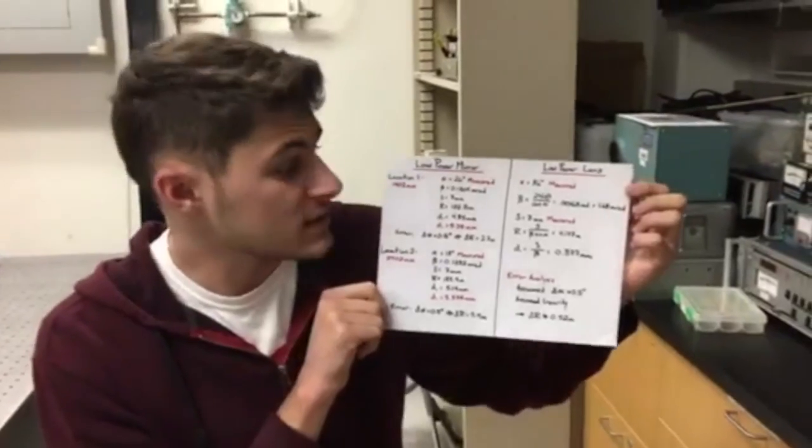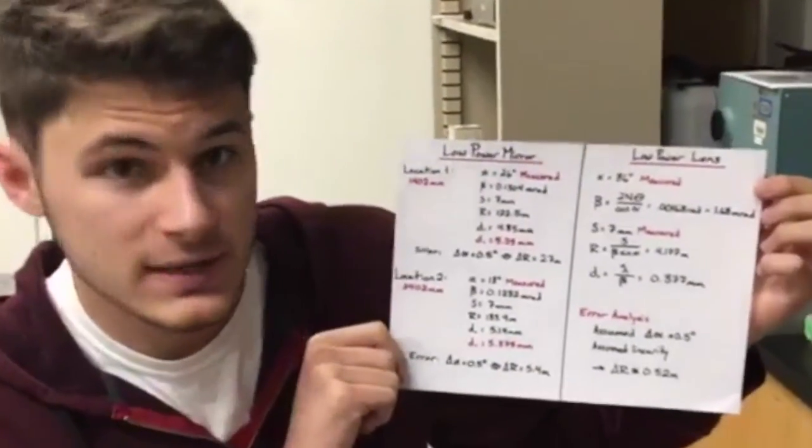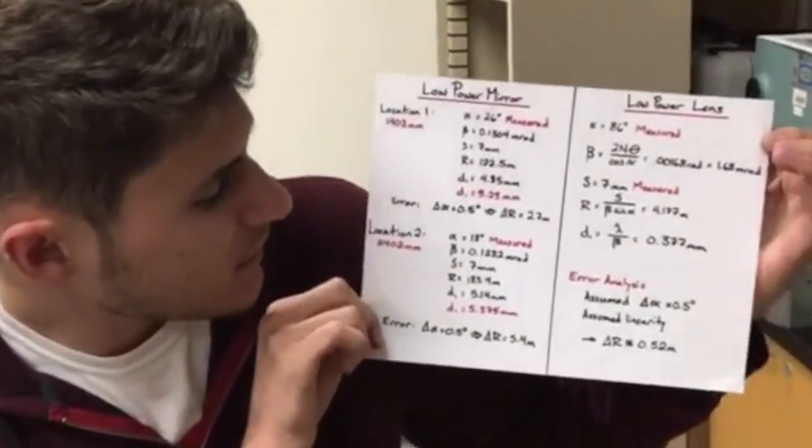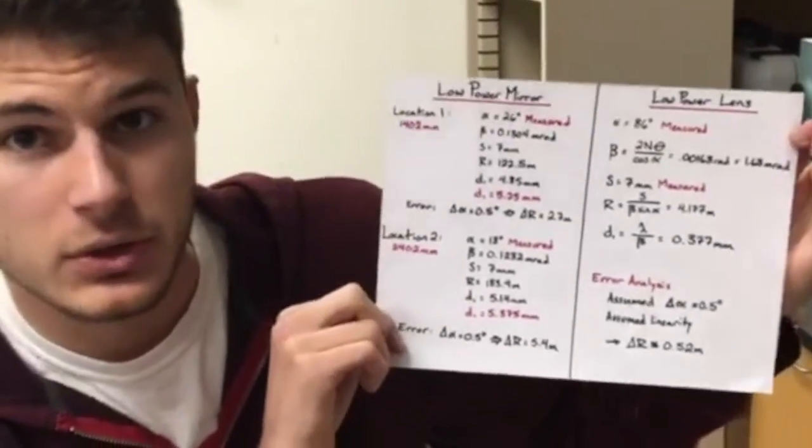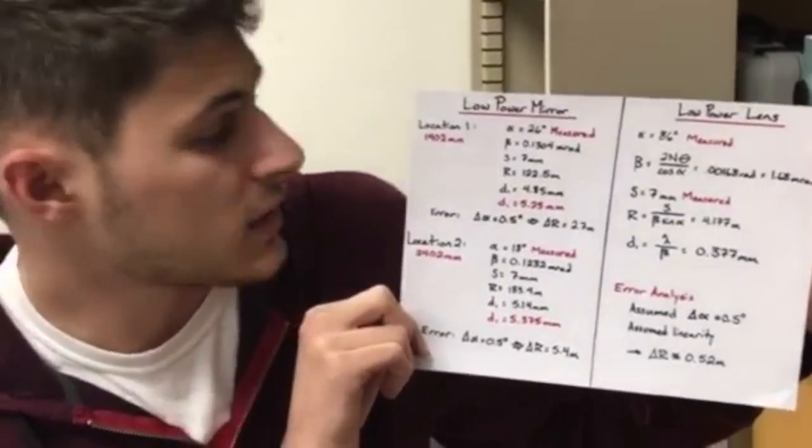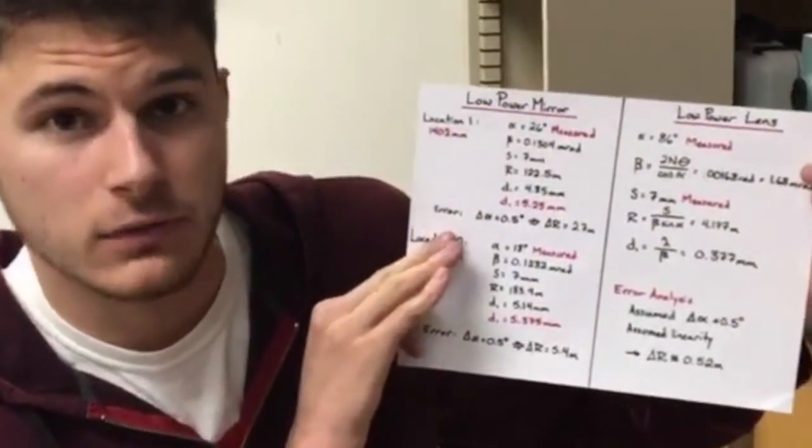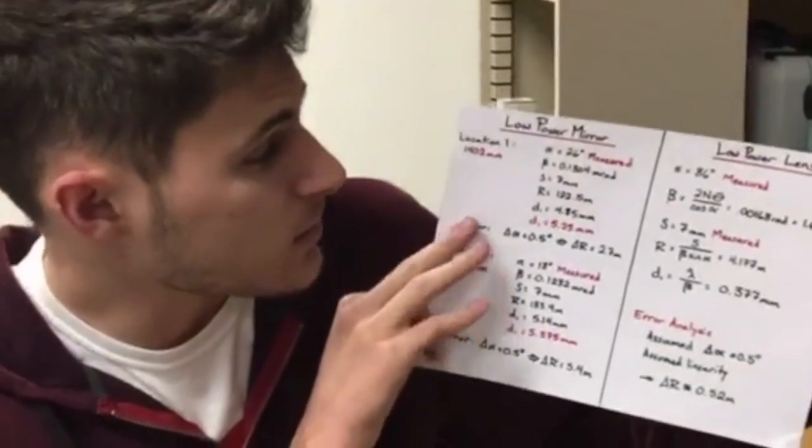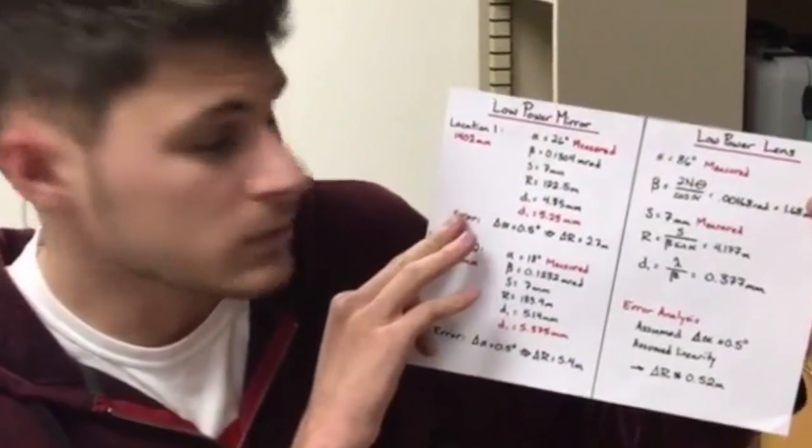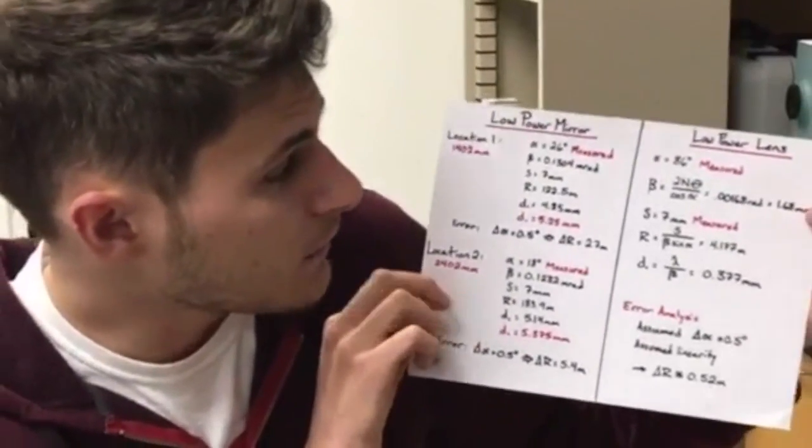This is our analysis and results section for the low-power mirror and the low-power lens. The biggest thing worth noting is that for the mirror, there were two locations that the values were taken. At one location, the radius of curvature of the wavefront was much smaller, and at the other it was much larger. That corresponded to a larger angle at the smaller radius location and a smaller angle at the larger radius location. For the lens, the fringe spacing was too small to take physical measurements with a ruler.